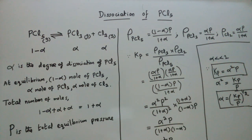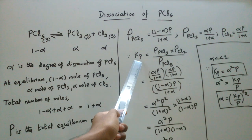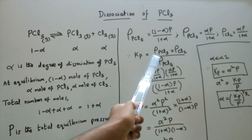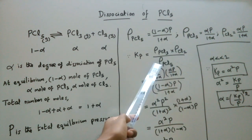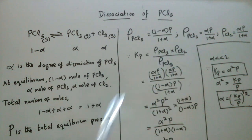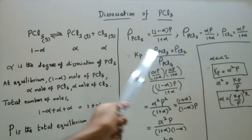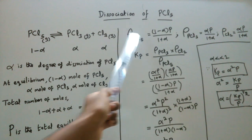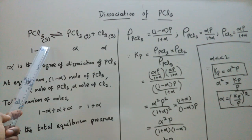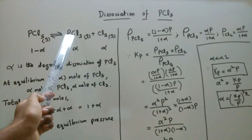Next we calculate the equilibrium constant Kp for this reaction. Kp equals the partial pressure of PCl₃ multiplied by the partial pressure of Cl₂, divided by the partial pressure of PCl₅. The partial pressure of PCl₅ is (1 minus alpha) times P divided by (1 plus alpha).